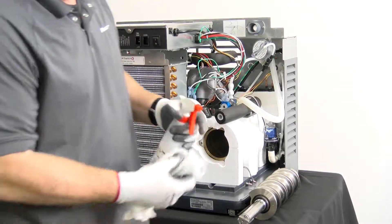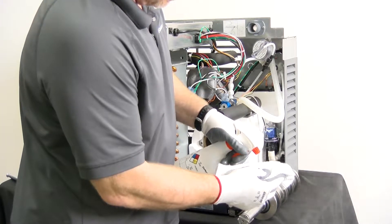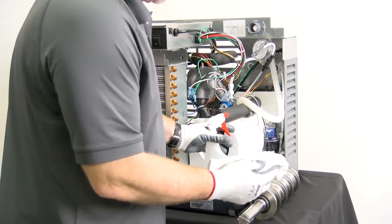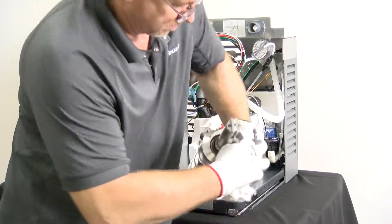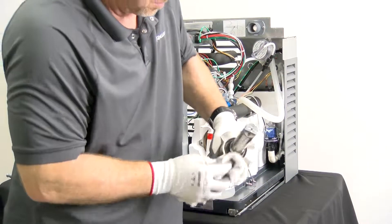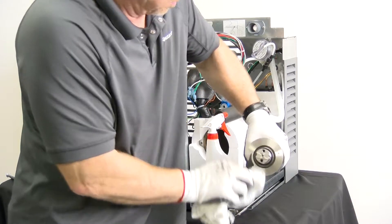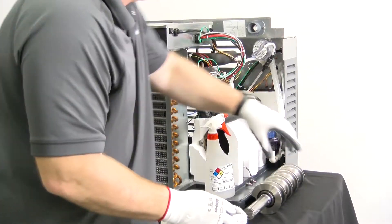First, use rubbing alcohol on the ceramic mating ring and shaft seal. Be careful to avoid touching the surface of the mating ring or shaft seal as oil from bare skin will cause the seal to fail prematurely.